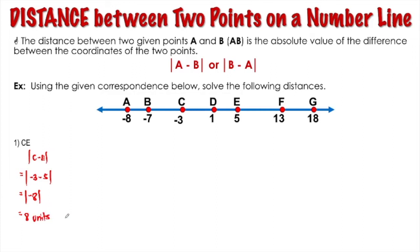Do not forget to include the label in the final answer. Next, let's have the distance between point D and point F. Using the formula, we have the absolute value of D minus F. Point D is 1 minus point F is 13, which gives us the absolute value of negative 12. So the distance from point D to point F is 12 units.